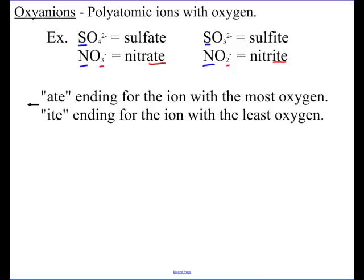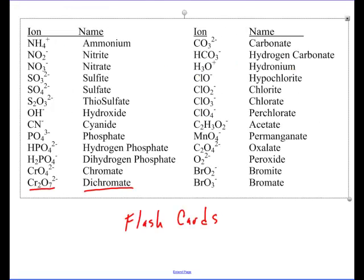Now, it would be wonderful if this rule was ate for 3 oxygens and ite for 2 oxygens, but you'll notice with the example up here it's not. Nitrate and nitrite. Nitrogen forms an oxyanion with 3 oxygens and 2 oxygens. The one that gets the most has the ate ending. Sulfate, on the other hand, forms 2 oxyanions with 4 oxygens and 3 oxygens. Again, the one that gets the most gets the ate ending, and the one that has the least gets the ite ending. It would be great if ate meant 3 and ite meant 2, but it doesn't, which again leads me back to this point. You really just got to spend some time memorizing these, and it'll come to you.